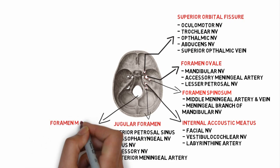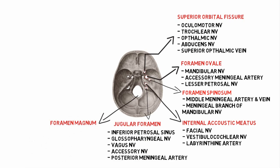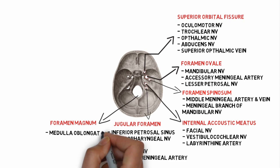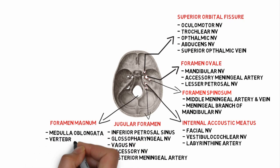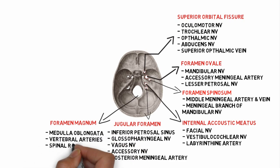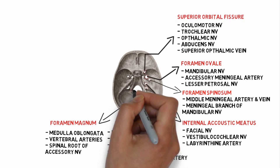The sixth one is the foramen magnum. Structures passing through it include the medulla oblongata, vertebral arteries, and the spinal root of the accessory nerve.